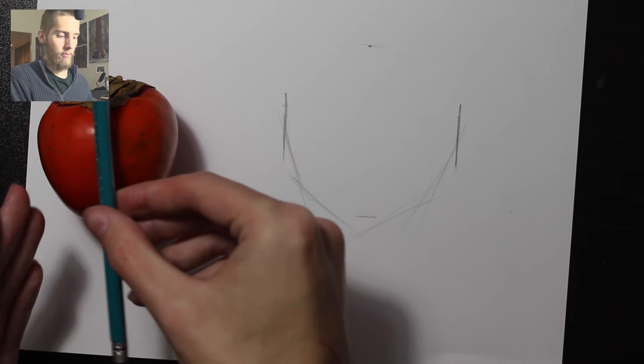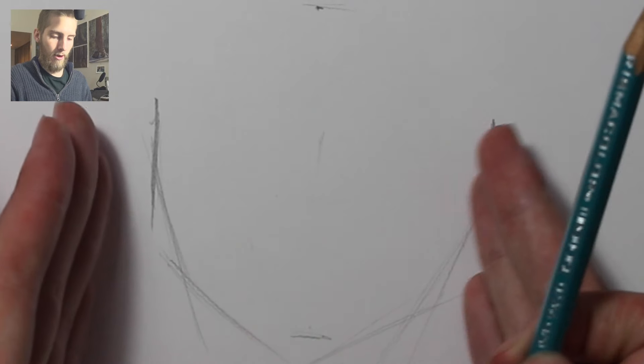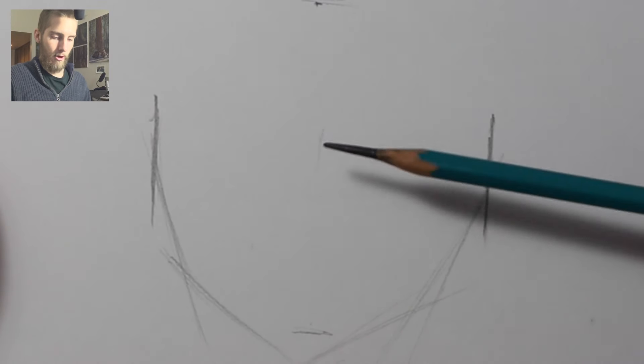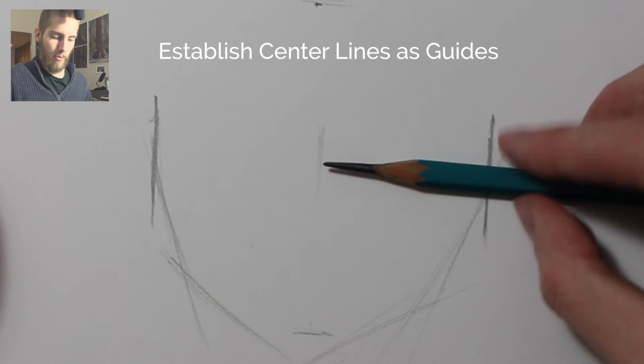Something else to keep in mind is finding a center line on your object. Here I can determine, I can roughly guesstimate where the center is because I have the width already. Now I can find the center and double check myself by measuring.